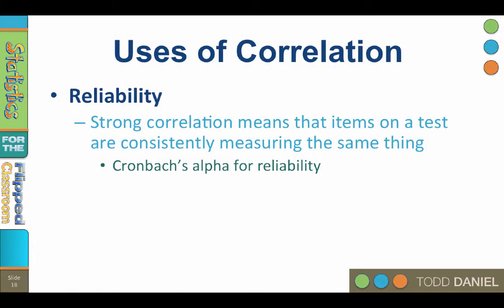Number one: reliability. A strong correlation between items on a test means that they are consistently measuring the same thing. If all of the items on the test correlate well, then you have a reliable test. This form of reliability is measured with a test called Cronbach's Alpha. When you give the same test to the same people twice in a row and the two administrations correlate strongly, you have test-retest reliability. Both of these are forms of correlation.